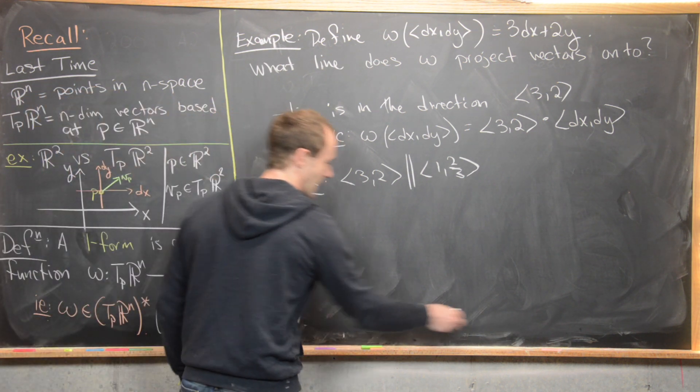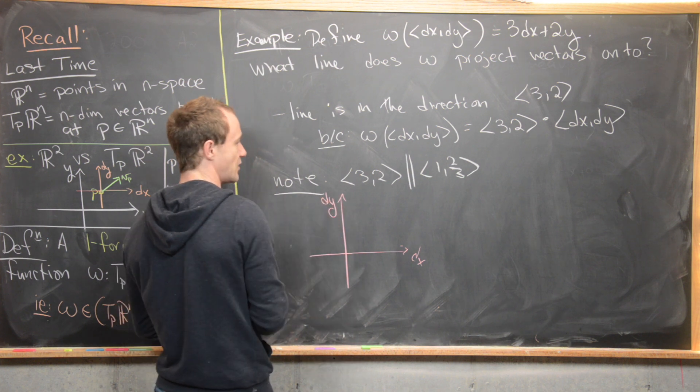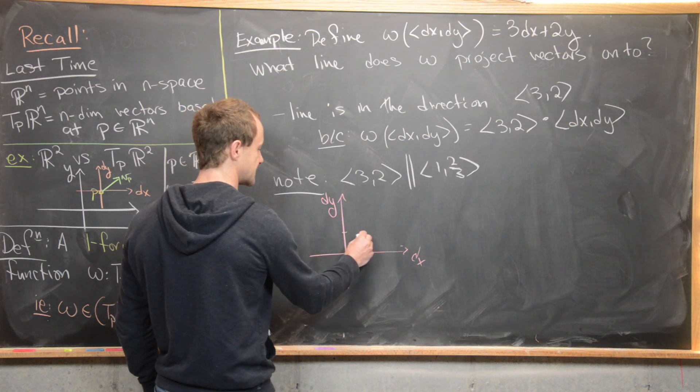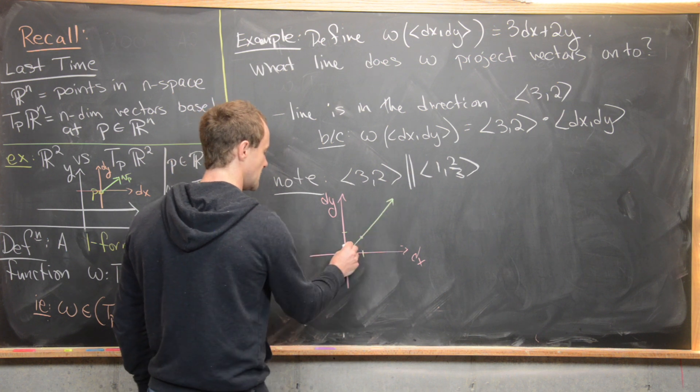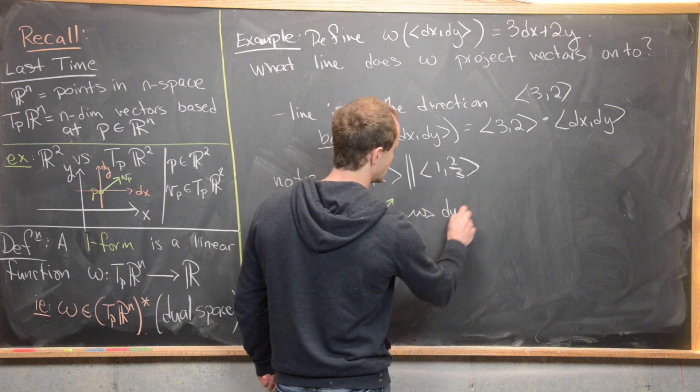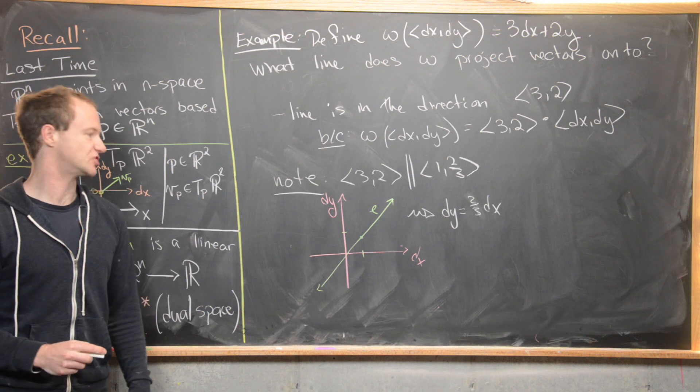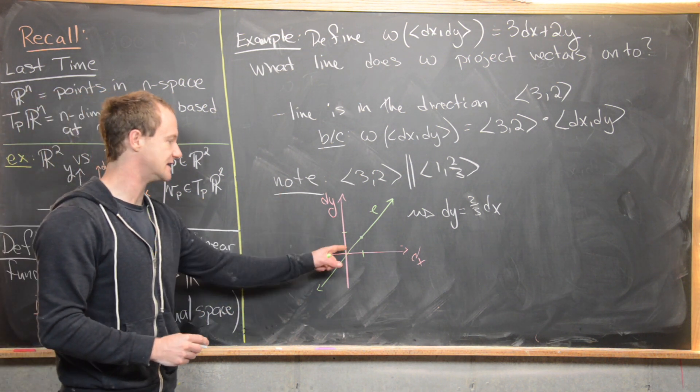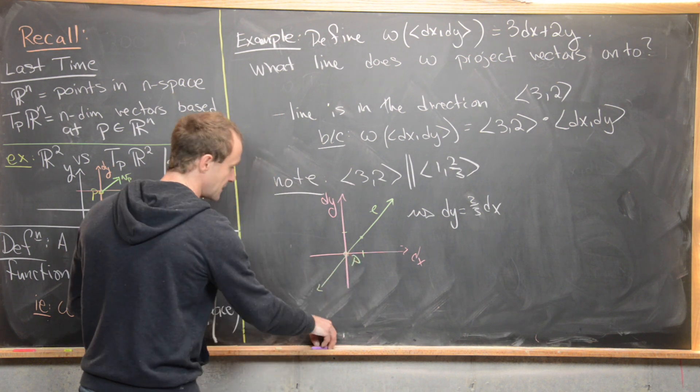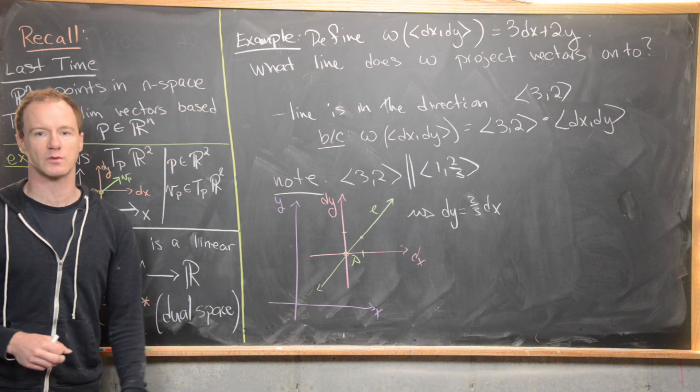But now if we look at that line on the dx-dy axis, if we have this dx-dy plane, and then if we go here to one, then that means we need to go here like two-thirds. So that's going to be right about there. So that would be the line in this case. In other words, this line has the equation dy = (2/3)dx. So that is the line that this thing is being projected onto. And recall that that line is happening in this coordinate system which is based at p and kind of all living inside a bigger copy of R^2.